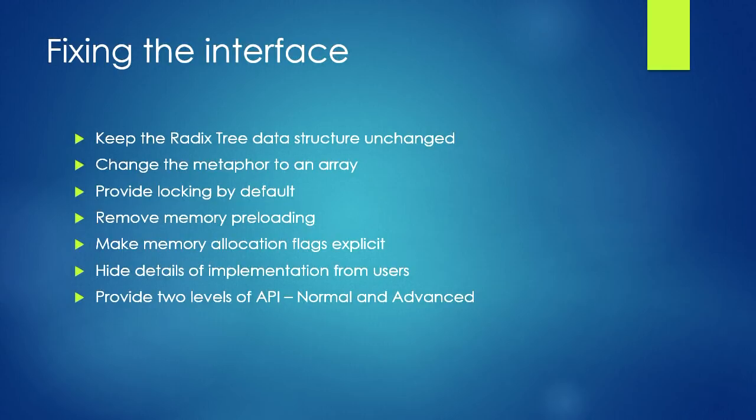Here's my approach: I'm keeping the radix tree data structure — it's great. There are very few problems with it. But let's change the metaphor and talk about this in terms of an array. It's an abstract array; we're not going to implement a resizing array because resizing arrays suck. We're keeping the radix tree data structure but we're going to pretend it's a resizing array.